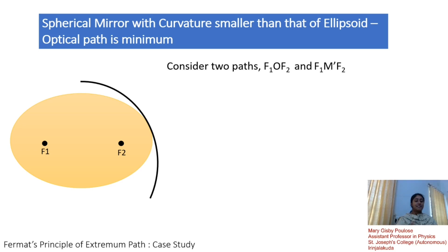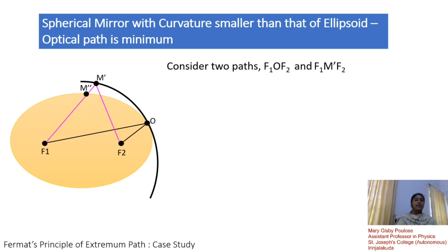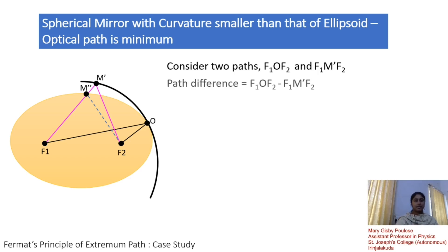Here, let us assume a light ray emerging from f1 takes two different paths: f1-O-f2 and f1-m'-f2. These two paths fall on the spherical mirror. We need to calculate the path difference between these two paths. For that, we take into consideration another point m'' upon the ellipse, and align m''-f2. Path difference is obtained as f1-O-f2 minus f1-m'-f2.